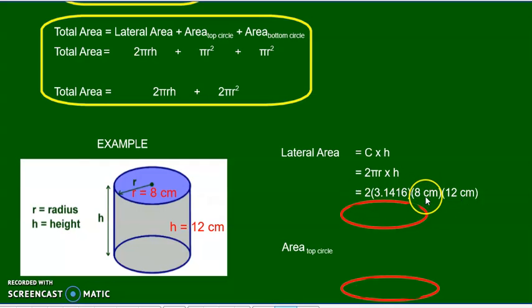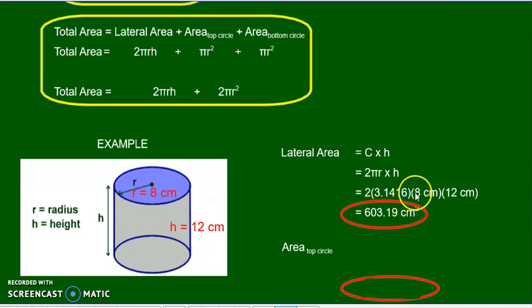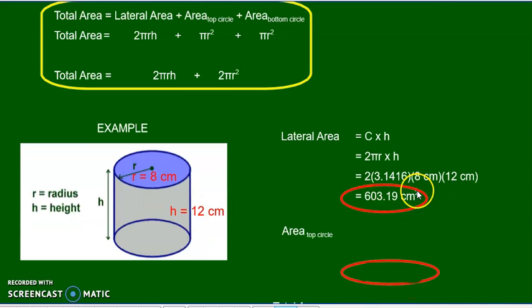So 2πr, that's the circumference, times the height. Centimeters times centimeters gives you centimeters squared — area is square units. Multiply all this out: 603.19 centimeters squared.